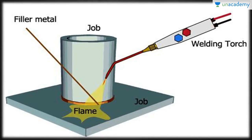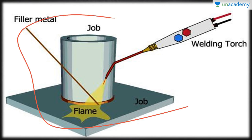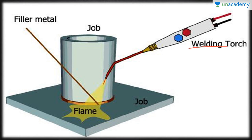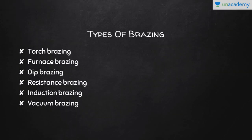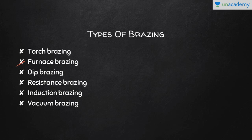Here you can see a flow diagram of the brazing process. Brazing is very similar to soldering, except the difference is in the melting point of the filler alloy. Brazing methods are classified based on the mode of application of heat. They are: torch brazing, furnace brazing, dip brazing, resistance brazing, induction brazing, and vacuum brazing.